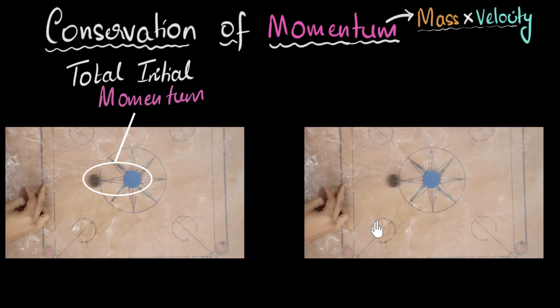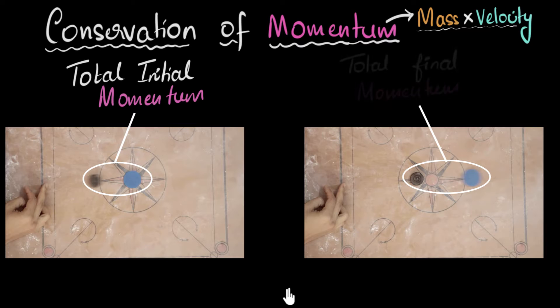And then, let's say you look at the situation after collision, after the coin hits it, and then again calculate the total momentum. We'll call this the total final momentum after collision. Then, this principle says these two will be equal to each other. Think about what this means. You see, after the collision, the black coin has slowed down, it has stopped actually, and the blue coin has speeded up.